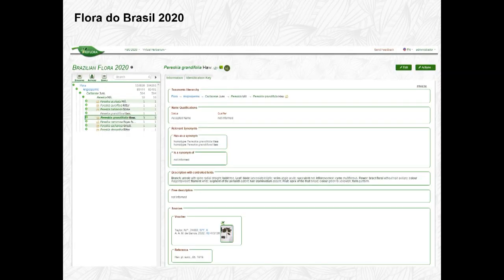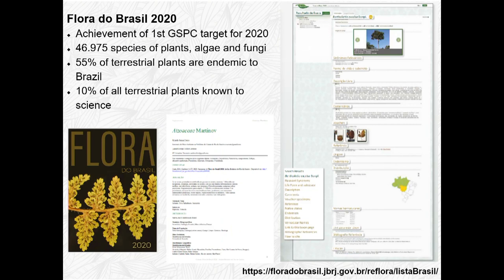This is how it looks after completion — with the description, the voucher, the synonyms, and whether a name is accepted or a synonym. After all this, we achieved the first target for the GSPC for 2020 as well. Brazil has one of the largest diversities of plants in the world — almost 47,000 species of plants, algae, and fungi. We have 55% of terrestrial plants endemic to Brazil, and 10% of all terrestrial plants on Earth are in Brazil.